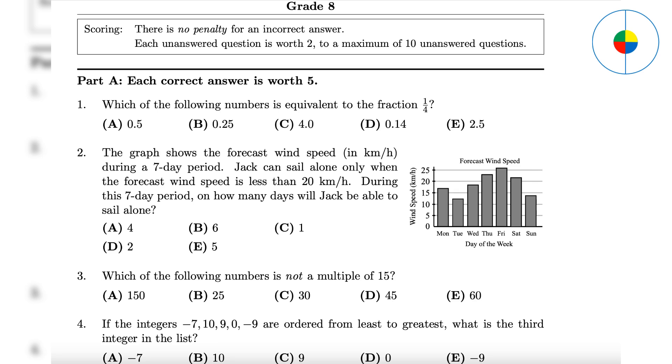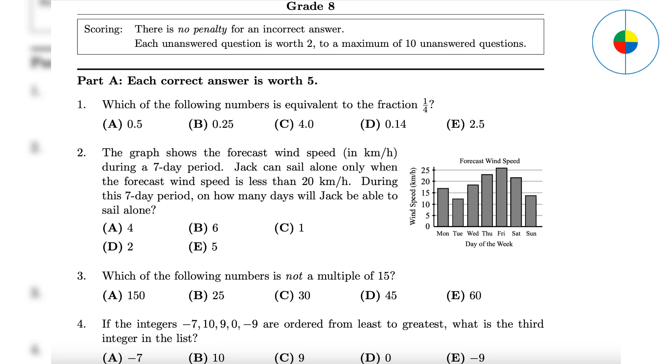Question 4: This is a simple ordering; the middle number is 0. Question 5: This is simple algebra. N is 7, so 10 times N is 70.